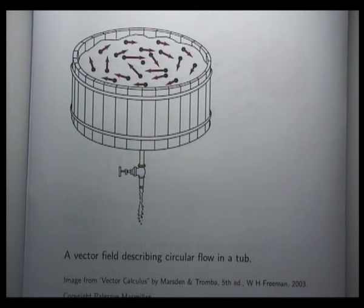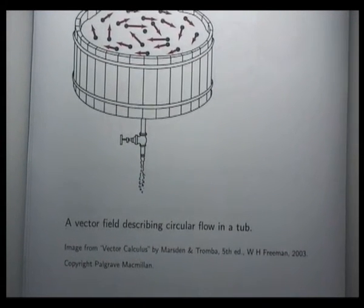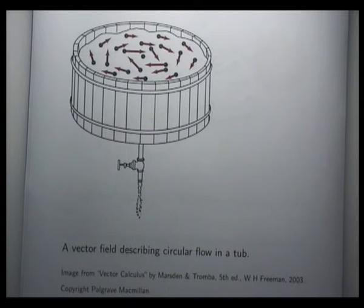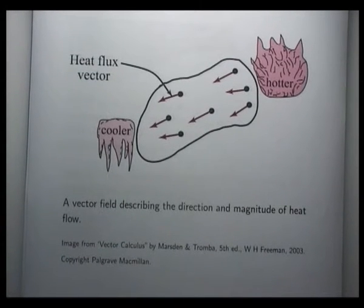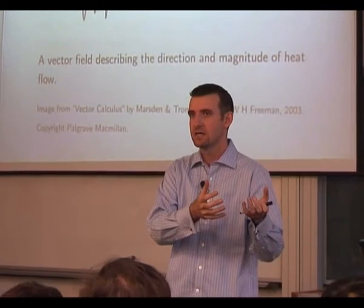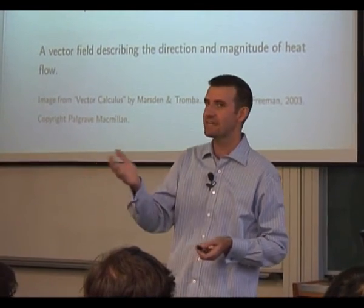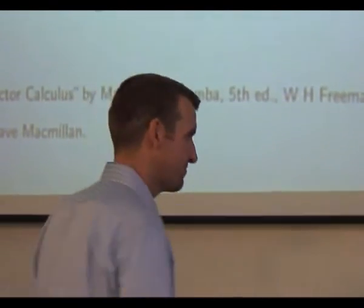Here's a very simple example: fluid draining from a tub. Here are the vectors associated with the vector field — it looks like there's some sort of rotation going on. Again, we can use a vector field to describe that flow. Another simplified example is the flow of heat. If you have a piece of metal and you heat one end and cool the other, the heat will flow from hot to cold. You can produce that by getting a temperature function and taking the gradient of that temperature function.